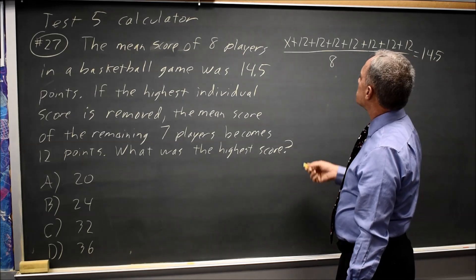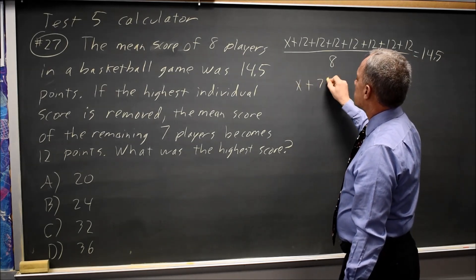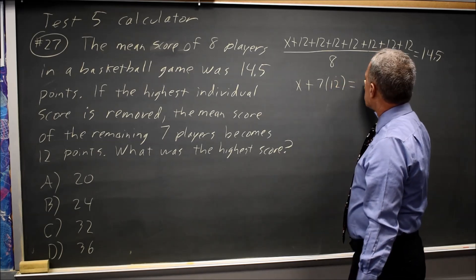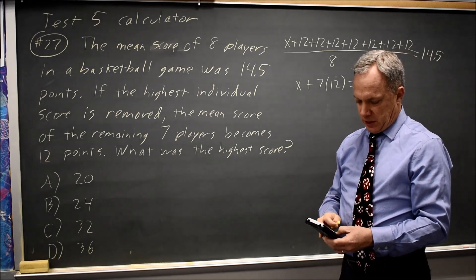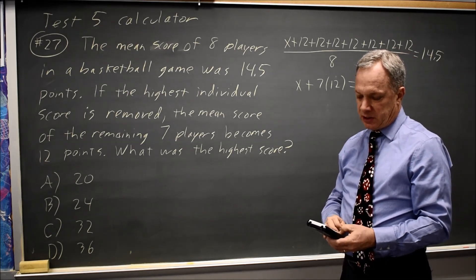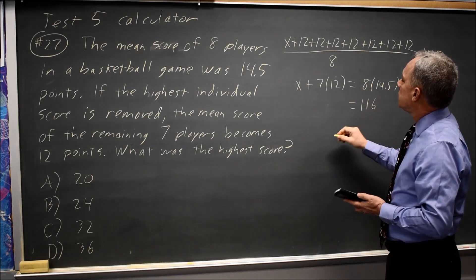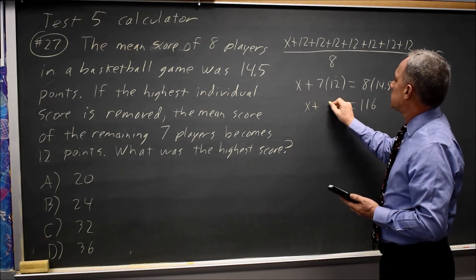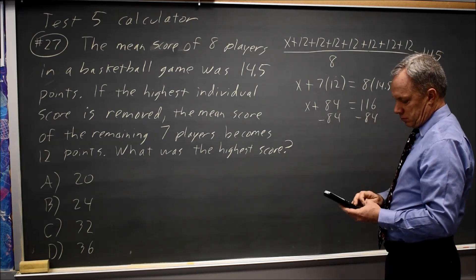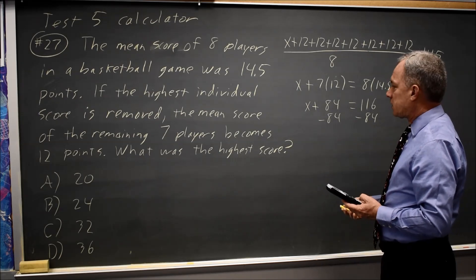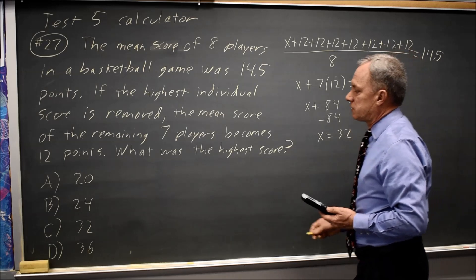If I multiply both sides by 8, I get X plus 7 times 12 equals 8 times 14.5. And this is a calculator question — 8 times 14.5 is 116. Subtract 84 from both sides, and I get the highest score is 32, which is choice C.